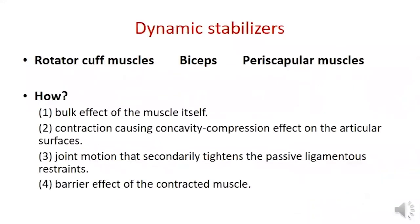The rotator cuff muscles, biceps, and periscapular muscles dynamically stabilize the shoulder through the bulk of the muscle itself, concavity compression effect on the articular surfaces, and joint motion that secondarily tightens the passive ligamentous restraints.